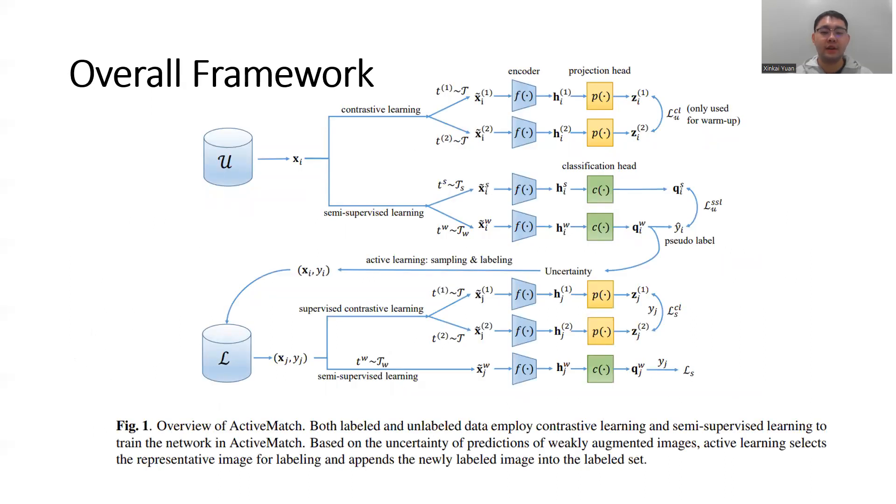These figures show the overall framework of our model. As you can see in the figure, both the large unlabeled dataset U and the small labeled dataset L employ contrastive learning and semi-supervised learning during the training.